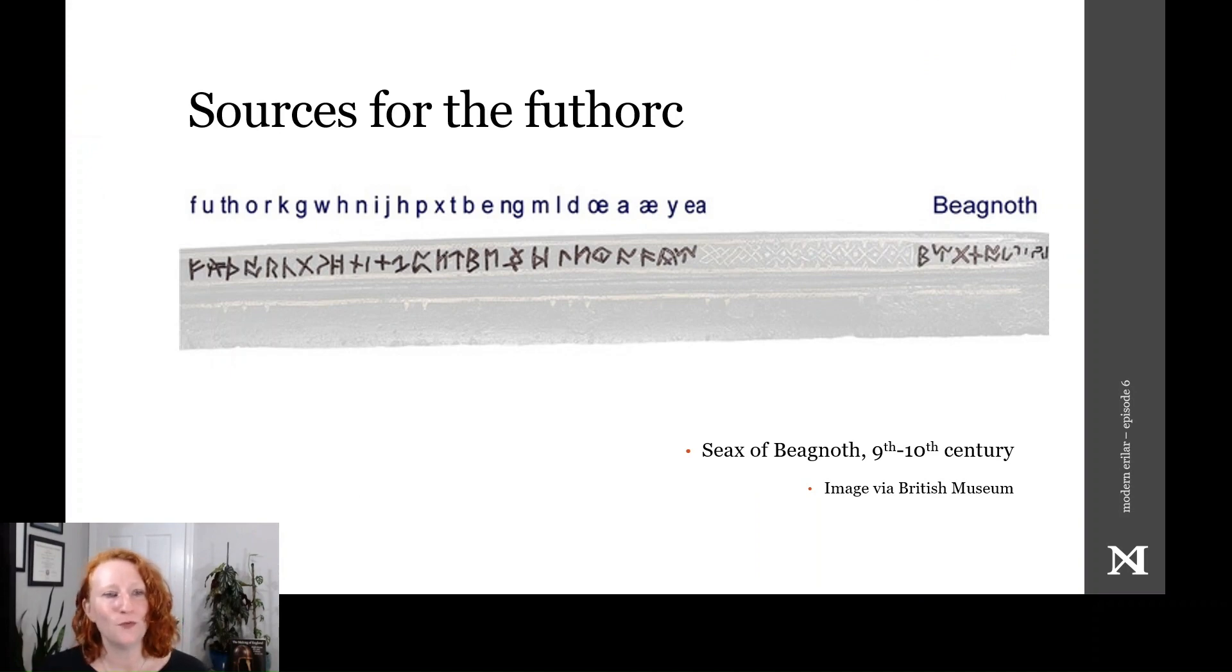We have a rune row from an artifact, inscribed on a 9th century scramasax found in the Thames River, also called the Sax of Beagnoth, after the name inscribed here on the blade. This artifact shows variations in the appearance of some of the runes as well as the order when compared with the Vienna Codex.